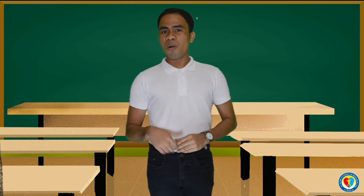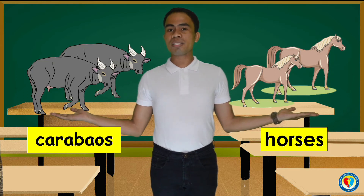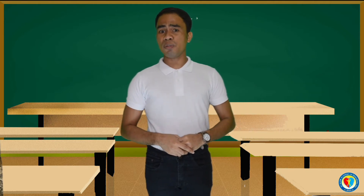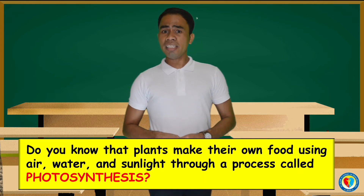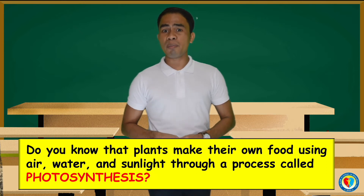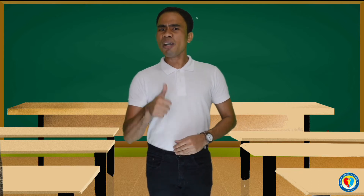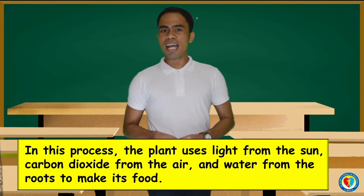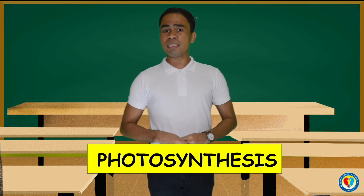Animals such as horses, carabaos, cows, goats, and animals who feed on plants also need food to survive. Did you know that plants make their own food using air, water, and sunlight through a process called photosynthesis? In this process, the plant uses light from the sun, carbon dioxide from the air, and water from the roots to make its food. Yes, it's photosynthesis.